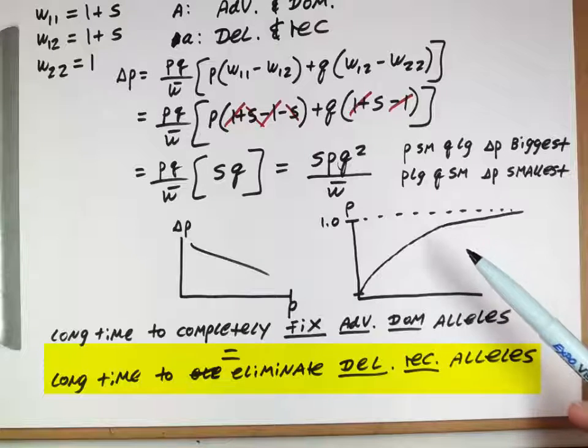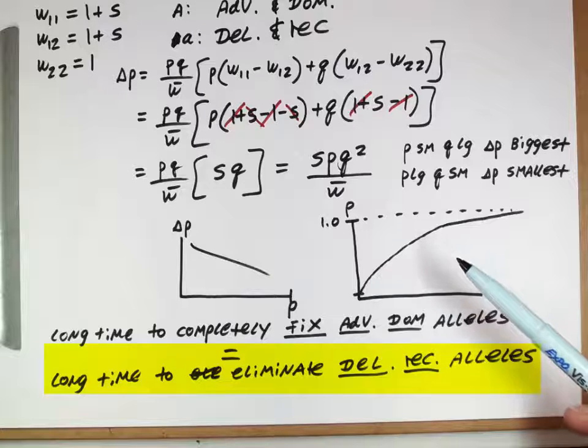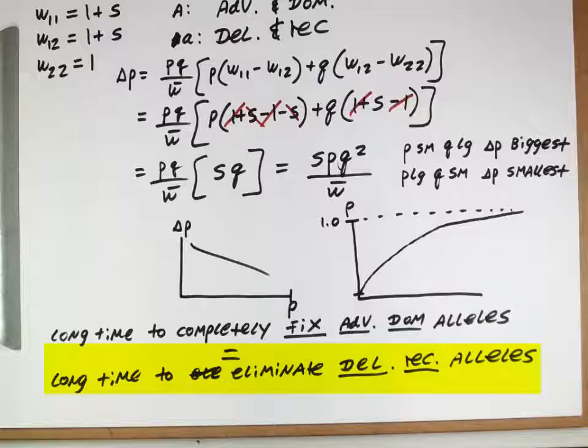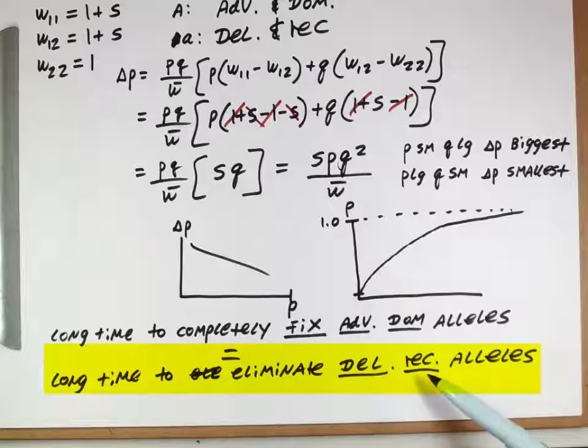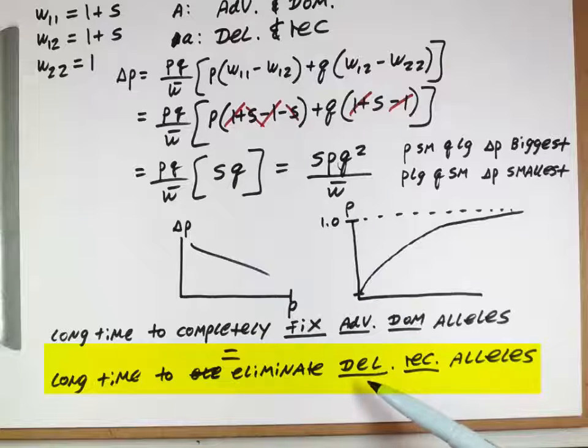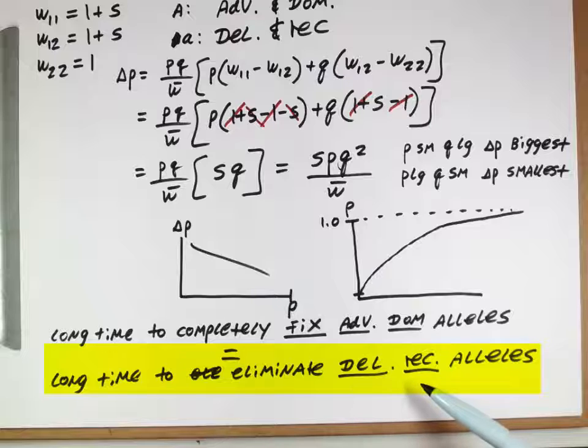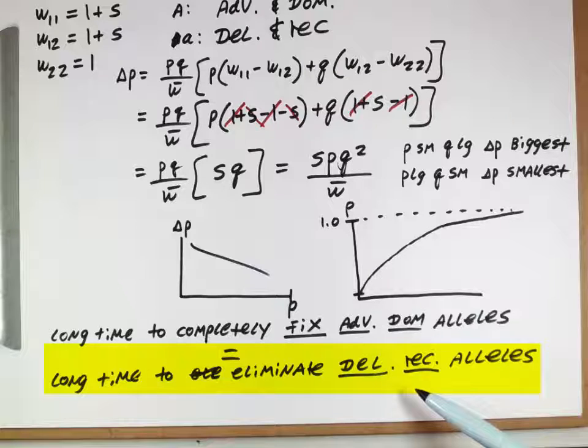And this result from population genetics allows us to better understand why genetic diseases are still around and why the genetic disorders that we see today, almost all the deleterious recessive ones, because they take longer to eliminate, rather than deleterious additive or deleterious dominant ones, which are actually much more quickly eliminated from a population.